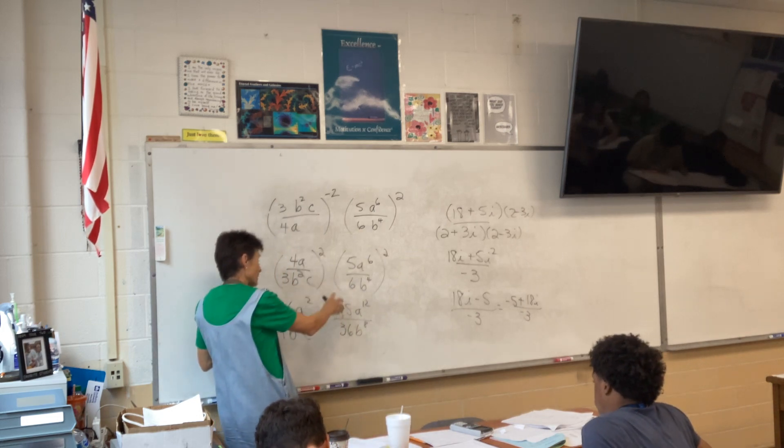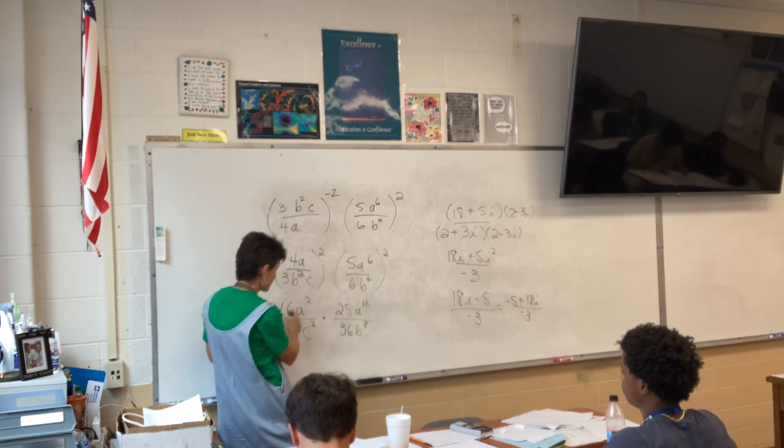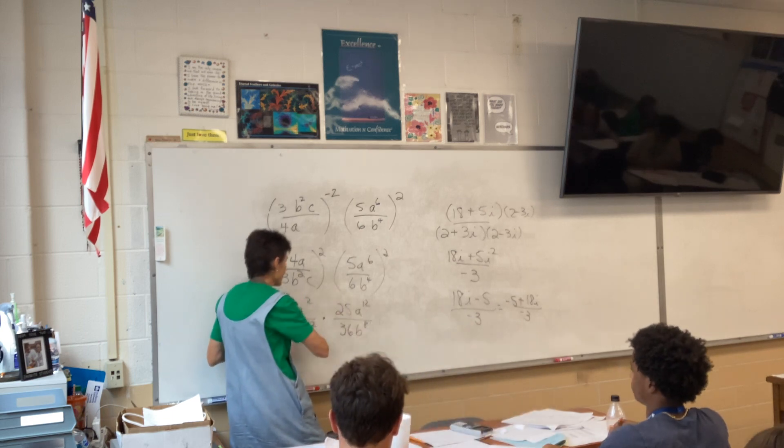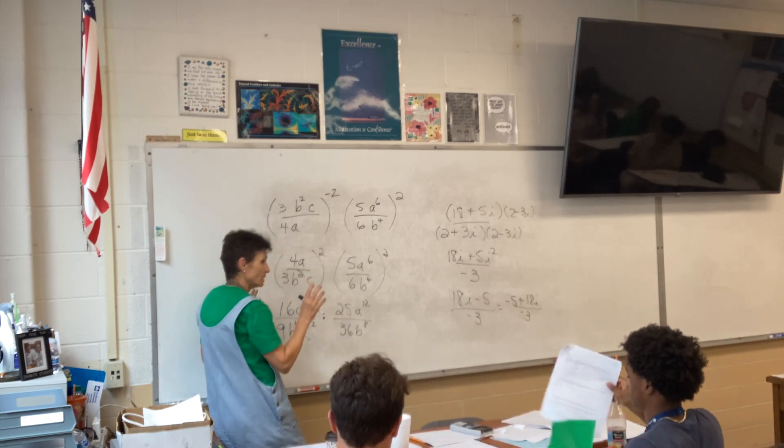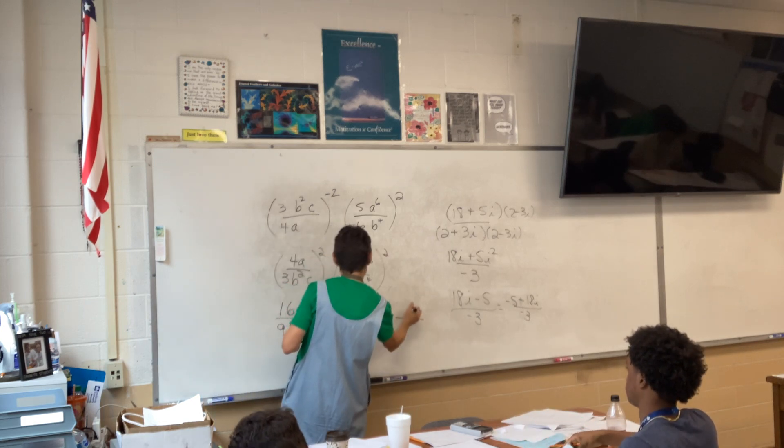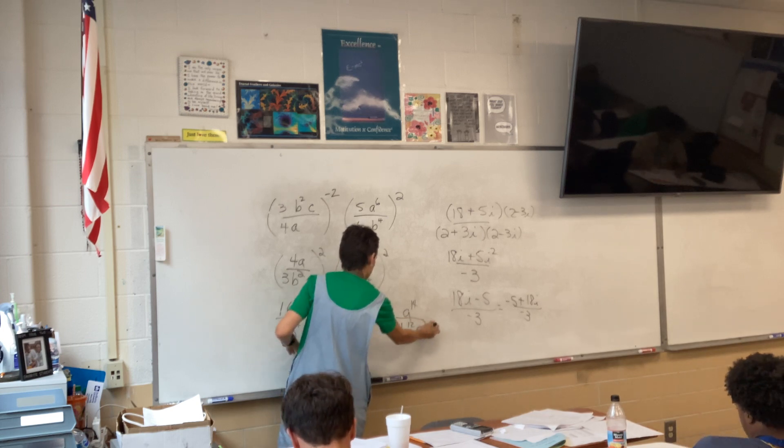And I flip my fraction over. Now, I'm going to square everything. 16A squared, 9B to the 4th C squared, 25A to the 12th, 36A squared. Now, I'm going to start doing this mess up. I can cross cancel. These times differently, and I can also cross whatever you can do.